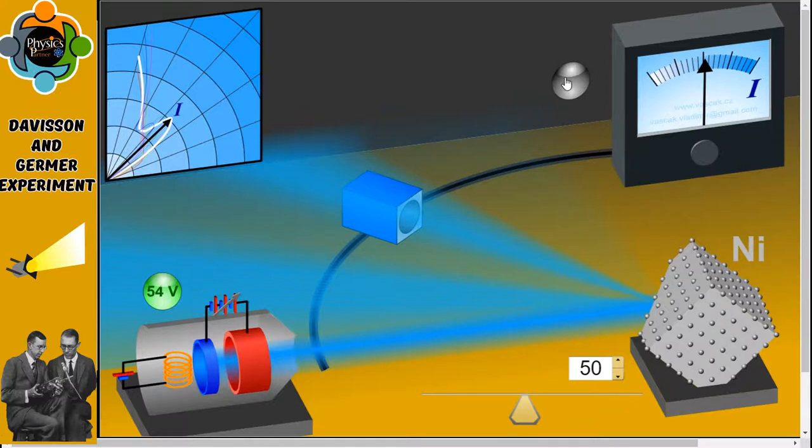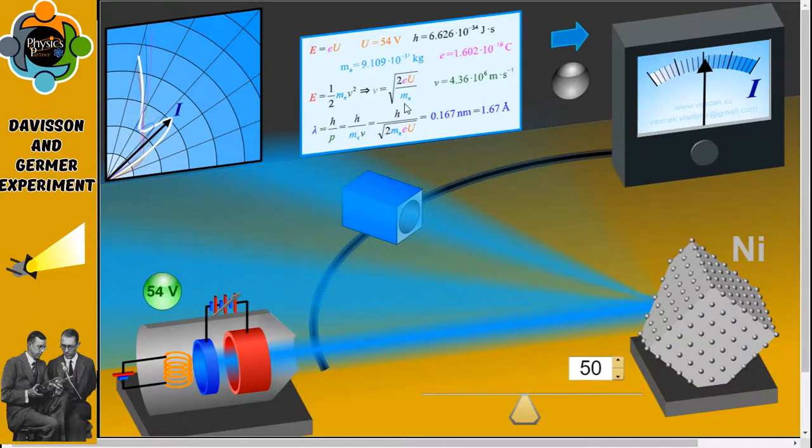So how do we calculate the wavelength? The wavelength of the matter waves was calculated with the help of electron diffraction. We can use the formula of energy, which is 1/2 mv squared, and Planck's constant. The wavelength, as you can see here, will be 0.167 nanometers if you correlate this Davisson-Germer experiment with the de Broglie relation.